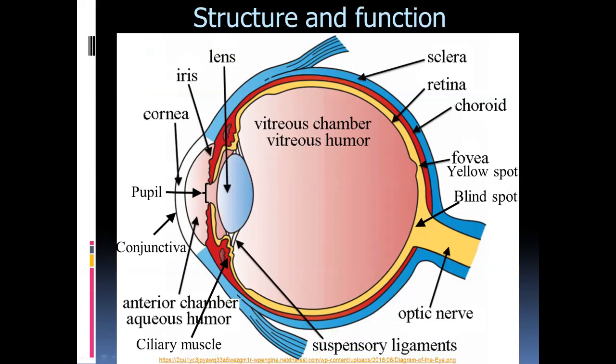We also have the ciliary muscle, attached to suspensory ligaments, which suspend and hold the lens in position. Now let's look at the functions of the various parts we've identified.